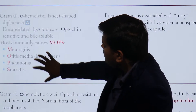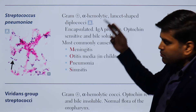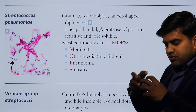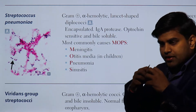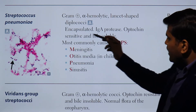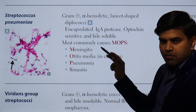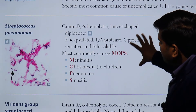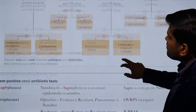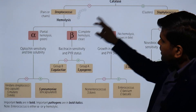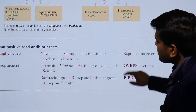Streptococcus pneumoniae is gram positive, alpha hemolytic, and presents as lancet-shaped diplococci — the diplococci appear like a shape with a small tail, forming a lancet shape. It is encapsulated, has IgA protease, and is optochin sensitive and bile soluble. This is catalase negative, alpha hemolytic streptococcus pneumoniae that is sensitive to bile and optochin.